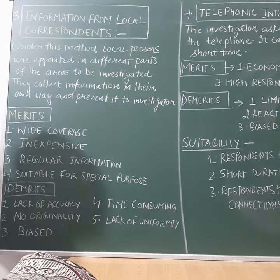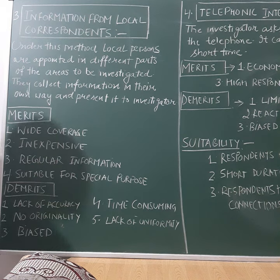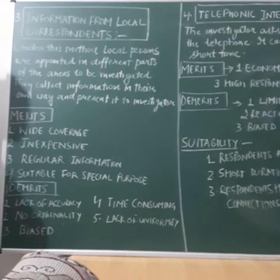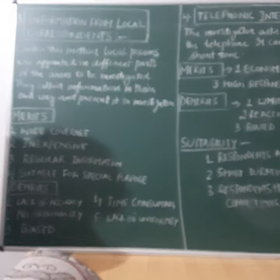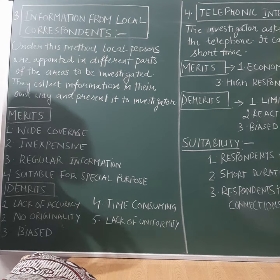The third method to collect primary data is information from local correspondence. Under this system, local persons are appointed in different parts of the areas to be investigated. They collect information in their own way and present it to the investigator. One simple example of this is how news channels are working.